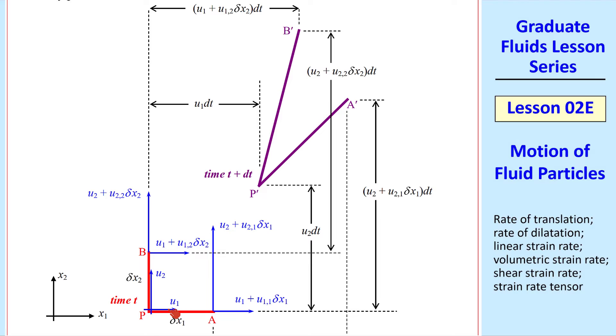If the speed to the right at point P is u1, the speed at A is u1 plus u1 comma 1 delta x1. Similarly in the vertical direction, the particle has moved u1 dt to the right and u2 dt up to get to point P prime.